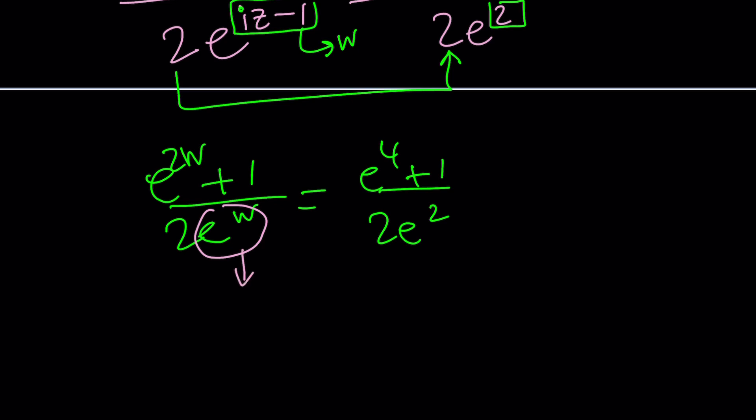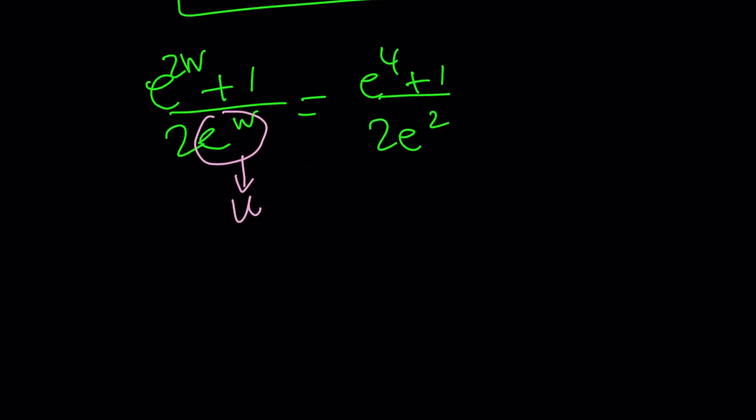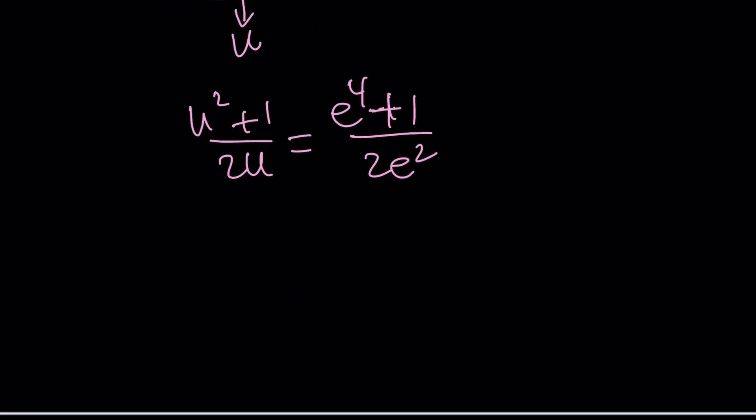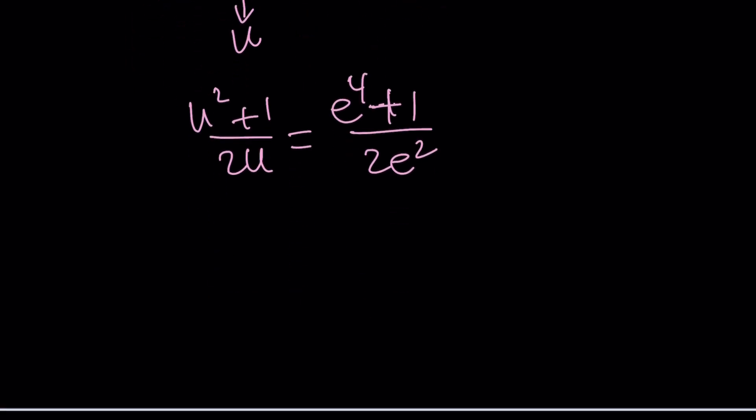And we can do one more substitution. Let's go ahead and I can't call it z, can I? Let's call it u. So now I have, and this will be u squared. u squared plus one divided by 2u. And now our goal, remember, is to solve for u. So let's go ahead and cross multiply.